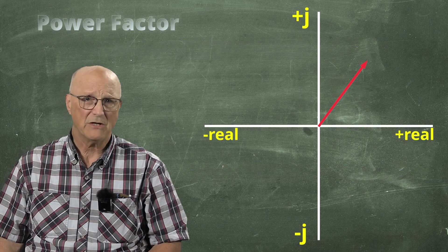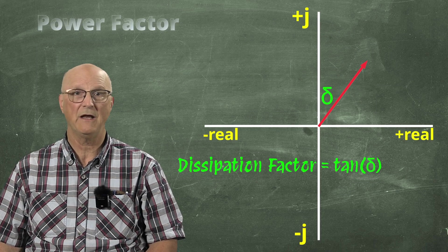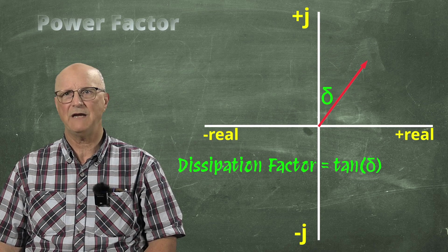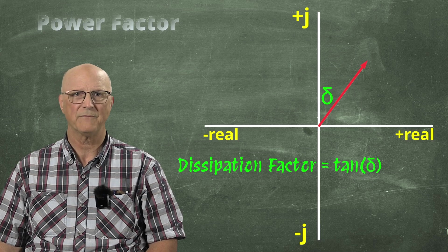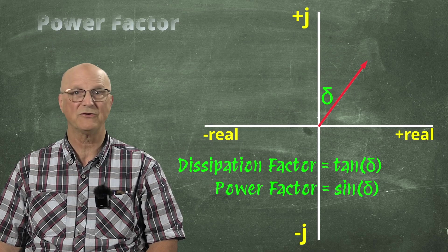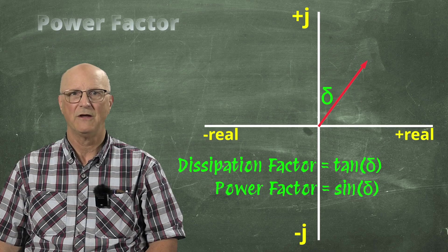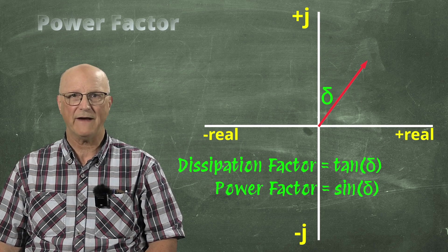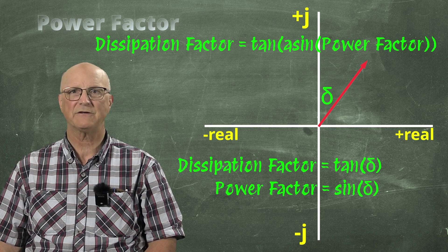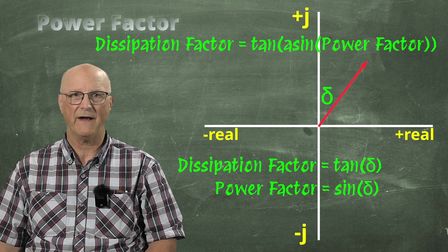Now, because we talked about dissipation factor as being the tangent of the angle between the vertical axis and the vector, we can also relate this same angle to power factor. Power factor is also equal to the sine of this same angle delta between the vertical axis and the vector. You can translate power factor to dissipation factor with this formula. Dissipation factor is equal to the tangent of the inverse sine of the power factor.